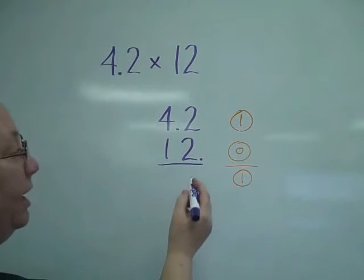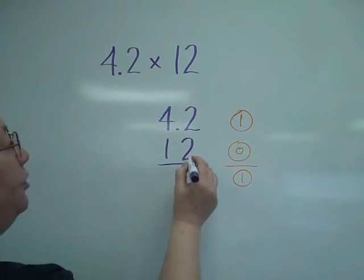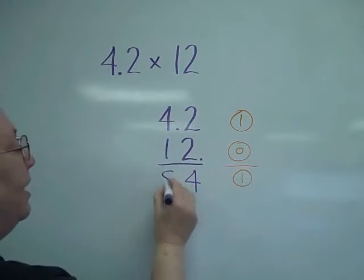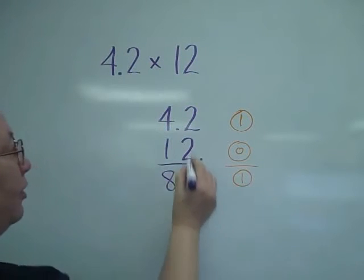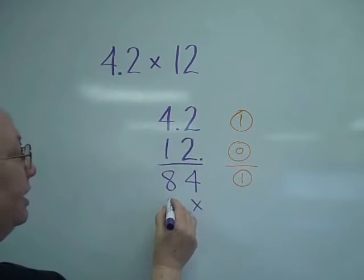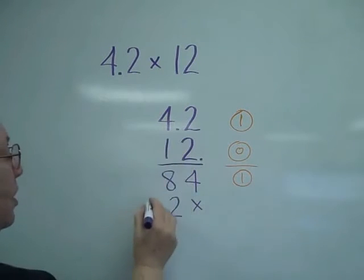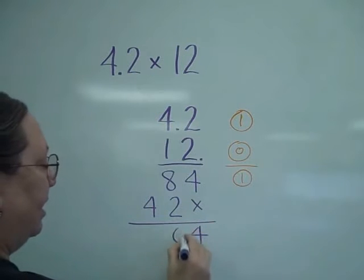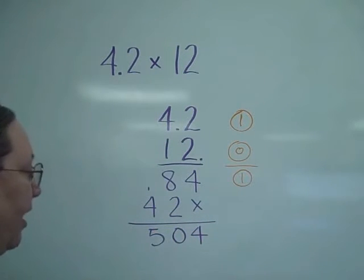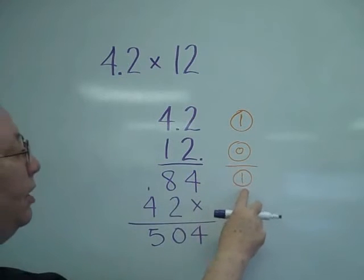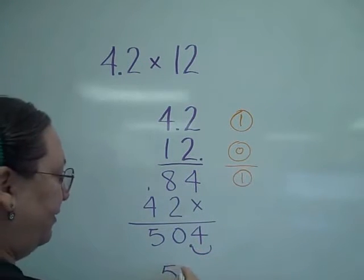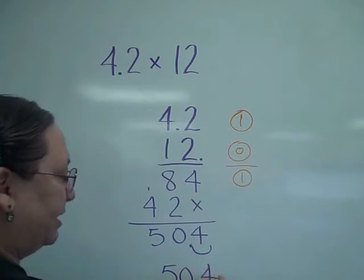So I can go ahead and just start multiplying. Two times two is four, two times four is eight. Remember to count over. Two times one is two, one times four is four. Add up, I've got ten, carry one, gives me five. And remember, I've got to have one number behind the decimal point. So my answer is 50.4.